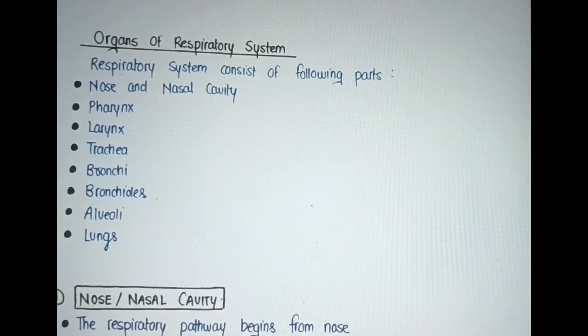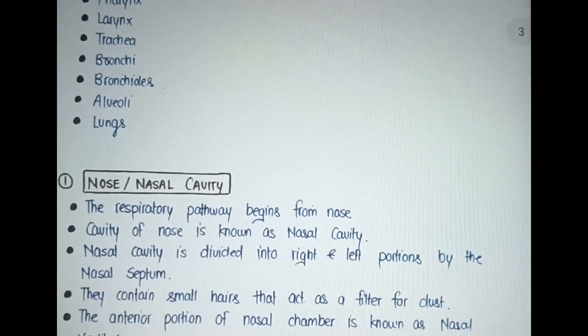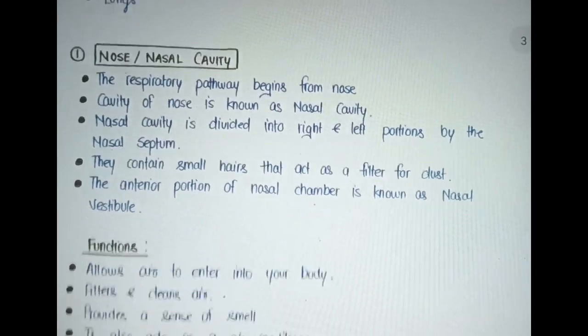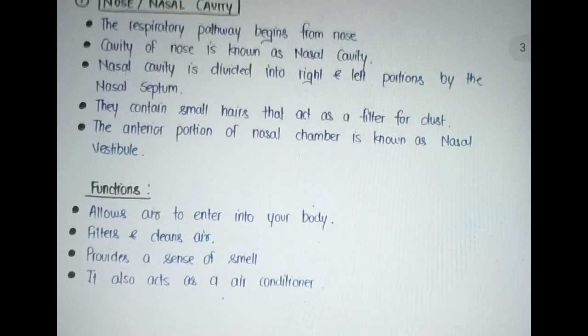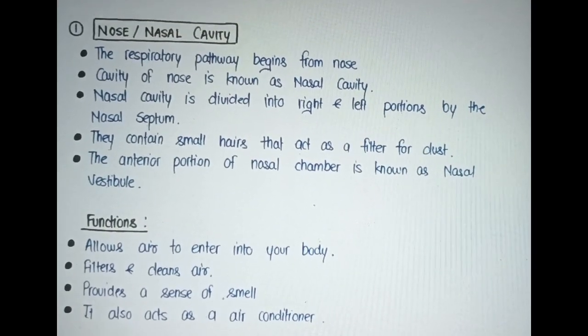Organs of the respiratory system. The respiratory system consists of the following parts: nose and nasal cavity, pharynx, larynx, trachea, bronchi, bronchioles, and lungs.